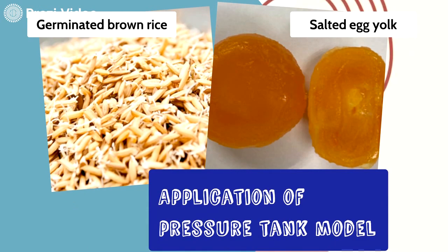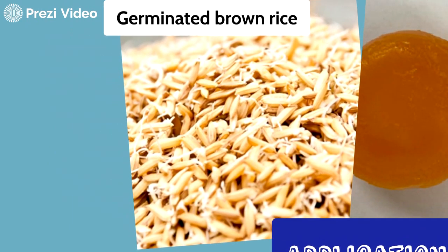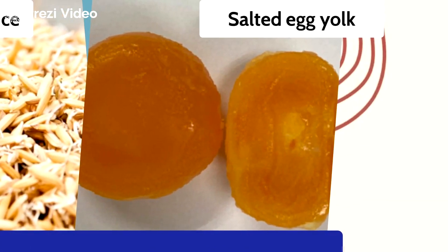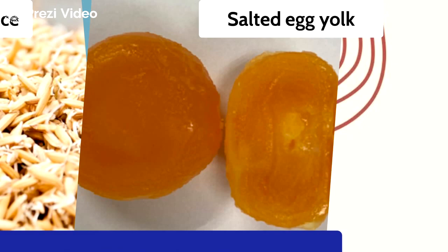This pressure tank system can be used with several agri-products, such as the stimulation of paddy germination and for the sorting of egg yolk. It will help reduce processing time and maintain the quality of the product.